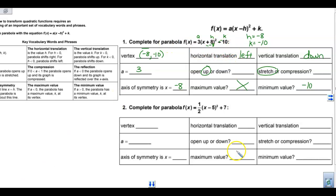Let's take a look at number 2. Our a is 1 half, our h is 5, and our k is 7. So h is 5, k is 7, and a is 1 half. All right, so our vertex is at hk, so it is at 5, 7.